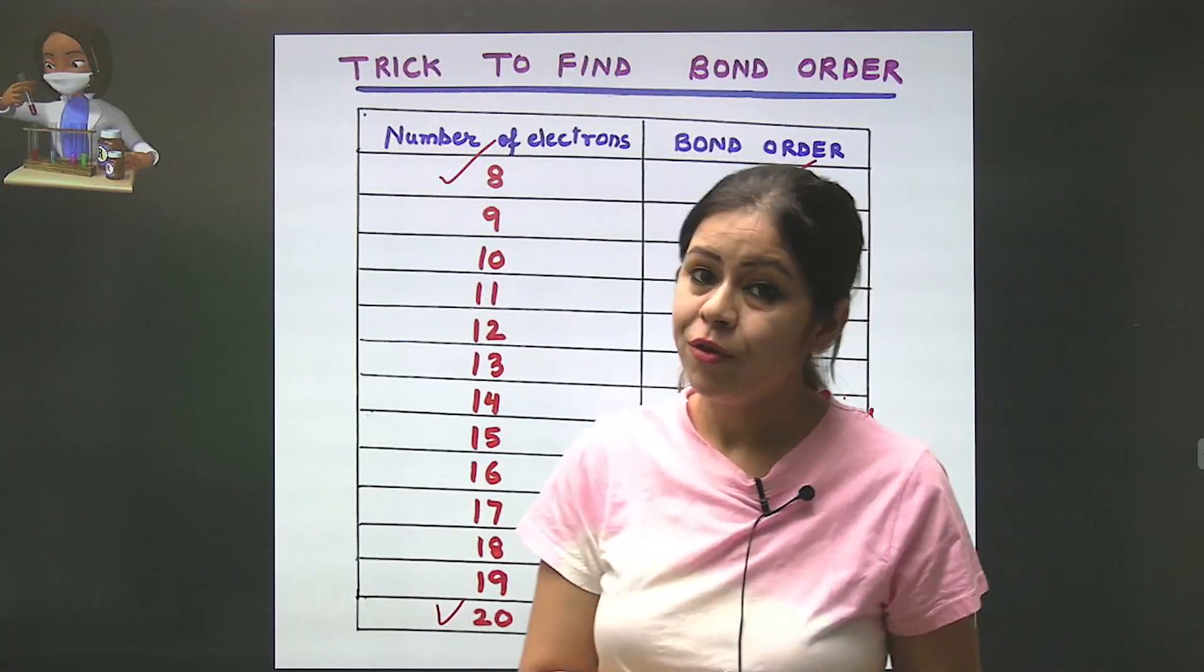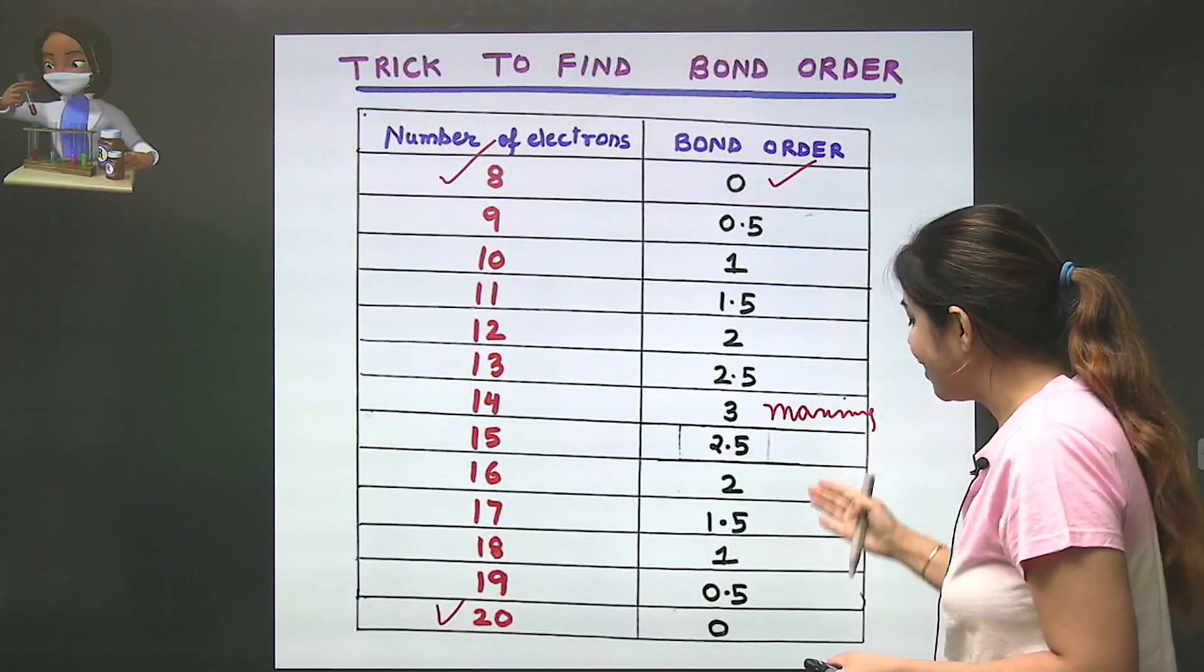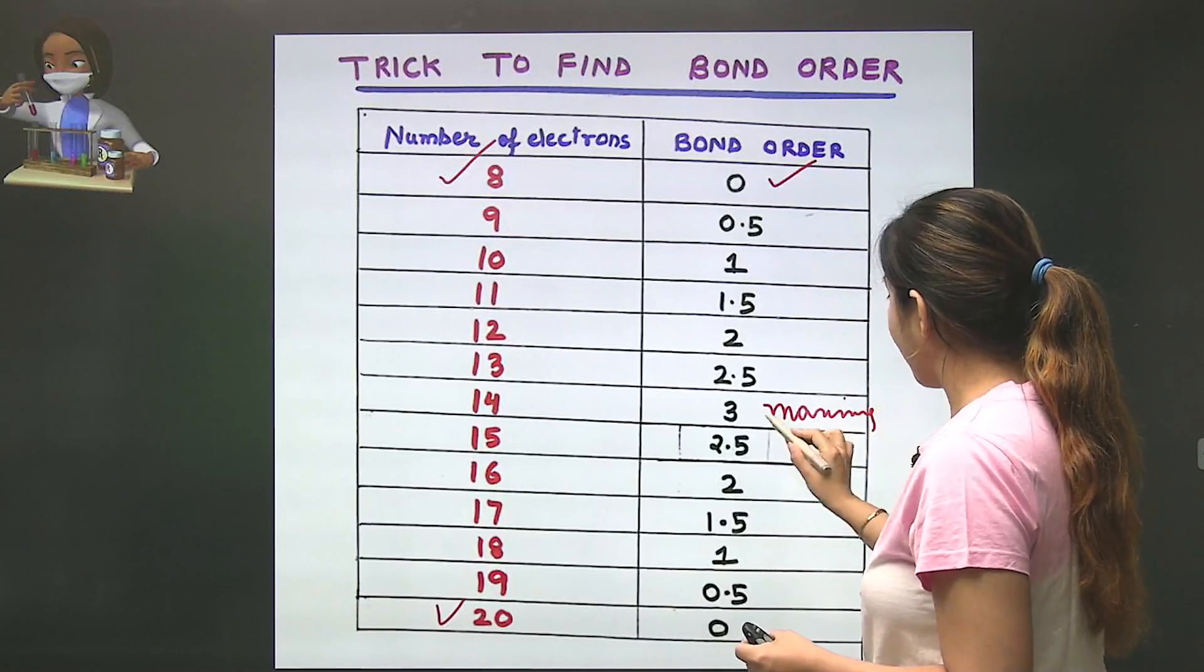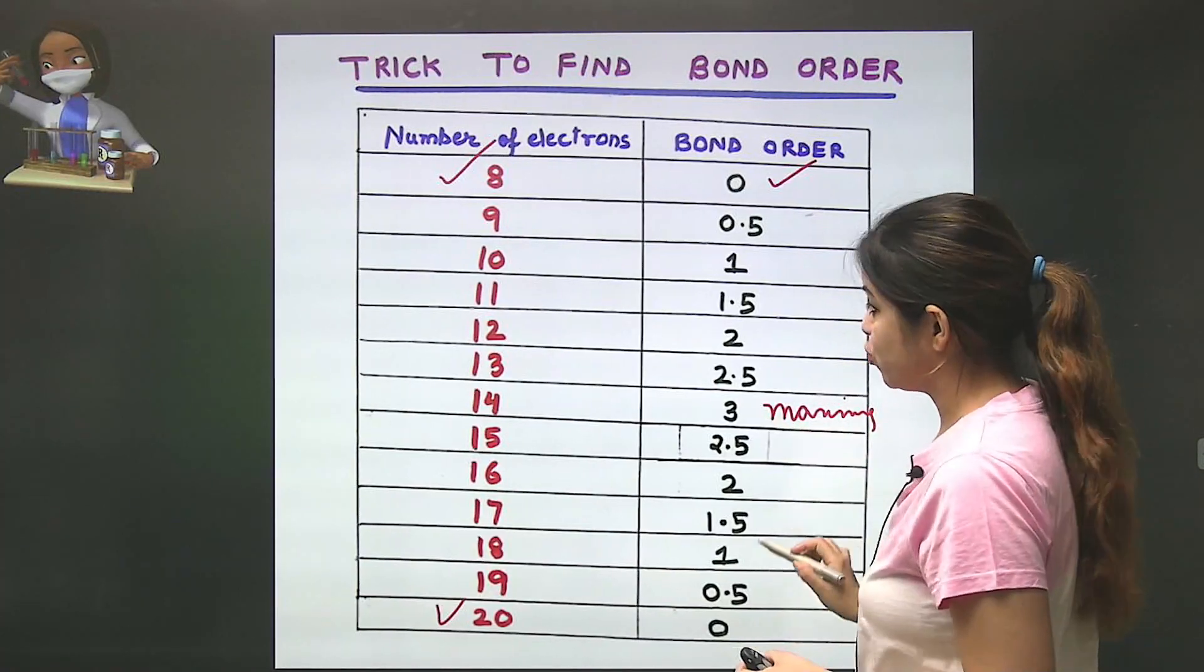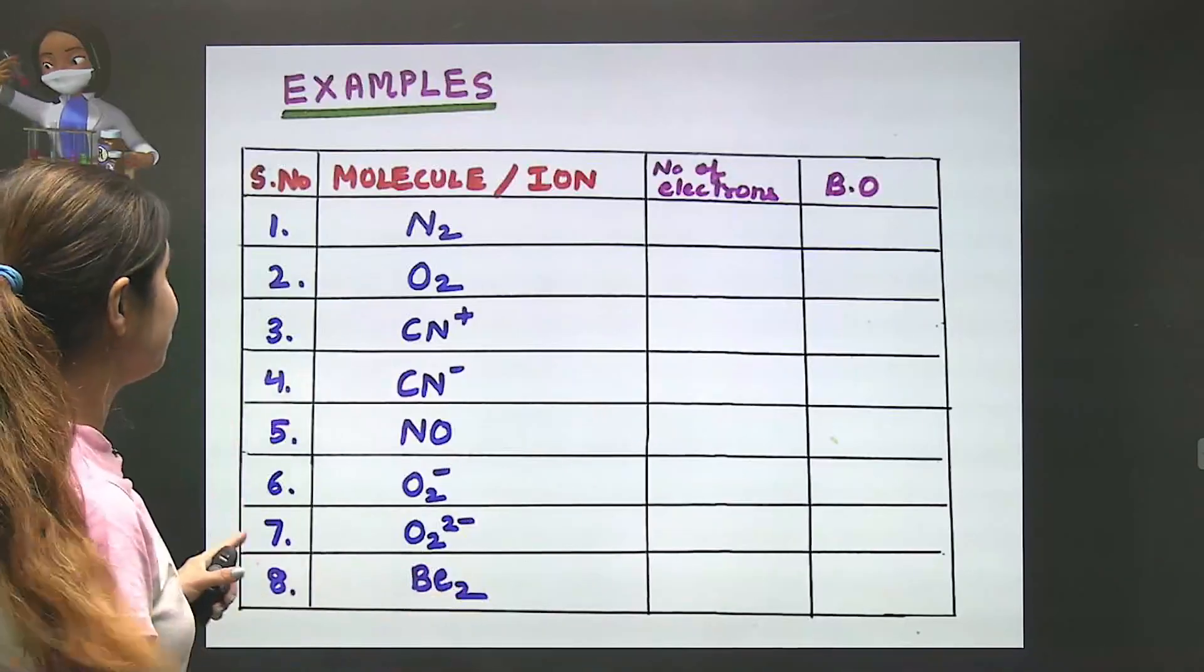After the maximum of 3, we decrease: 2.5, then 2, then 1.5, then 1, then 0.5, then 0. So it increases by 0.5 increments until the maximum, then decreases. The trick is already over, but applying it is more necessary.